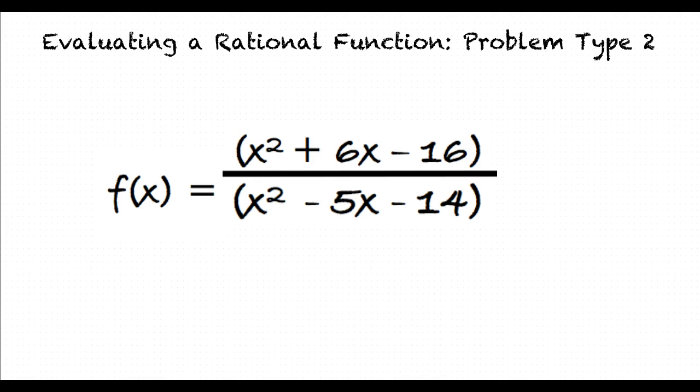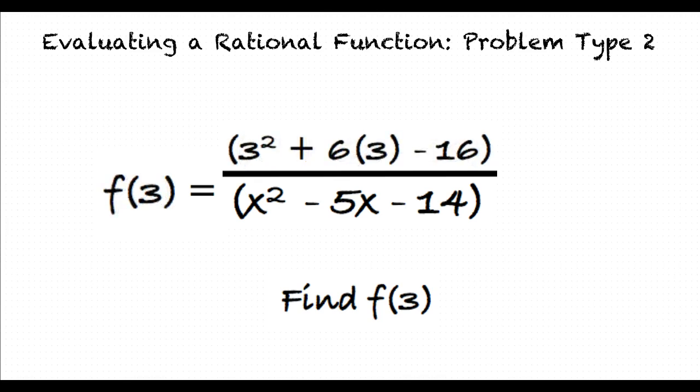Let's use the above example and evaluate for f of 3. To do this, we must substitute 3 for x in our function. f of 3 equals 3 squared plus 6 times 3 minus 16, divided by 3 squared minus 5 times 3 minus 14. Next, we will simplify the numerator and denominator by multiplying, adding, and subtracting.